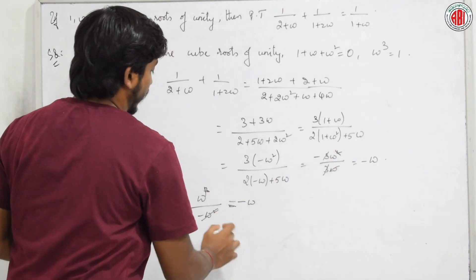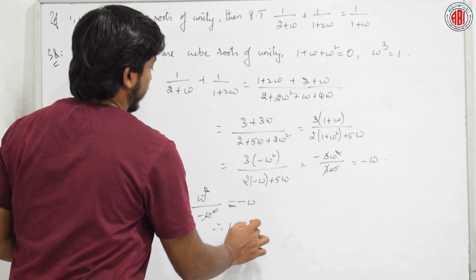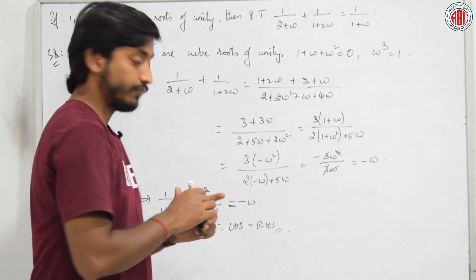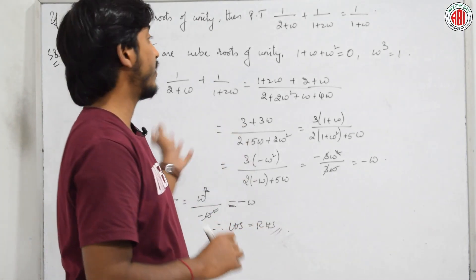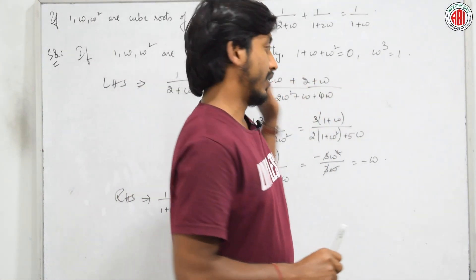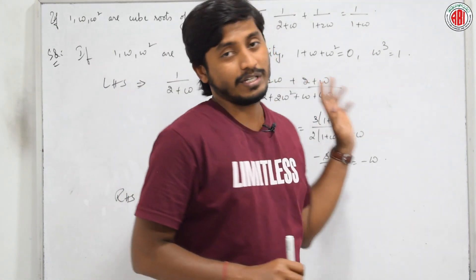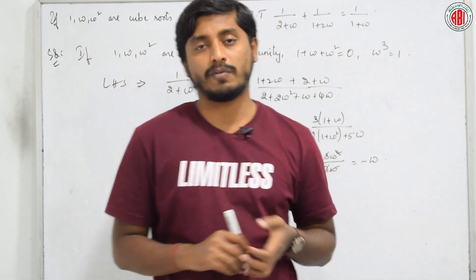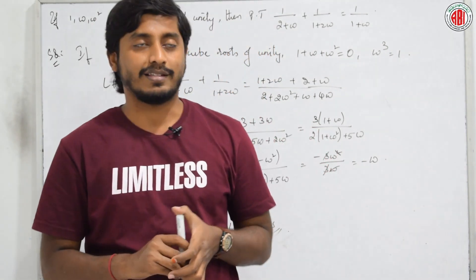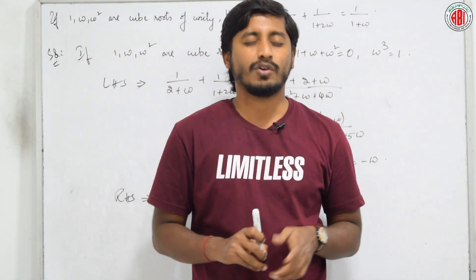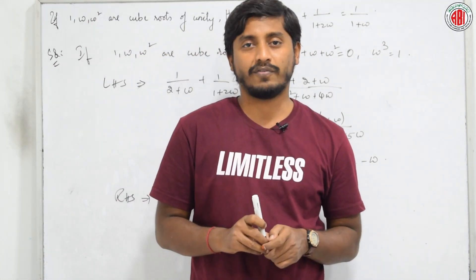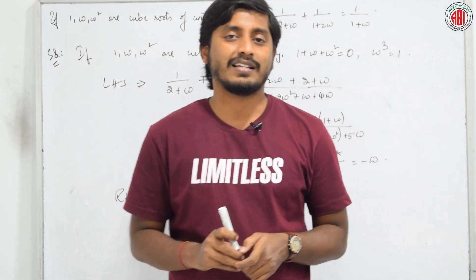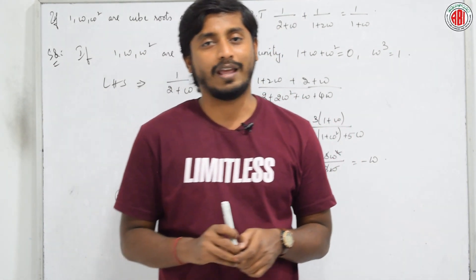LHS = RHS = −ω, so the identity is proved. These are the basic questions of De Moivre's Theorem. We end our discussion here. Let us meet in the next session with more problems of Maths 2A.